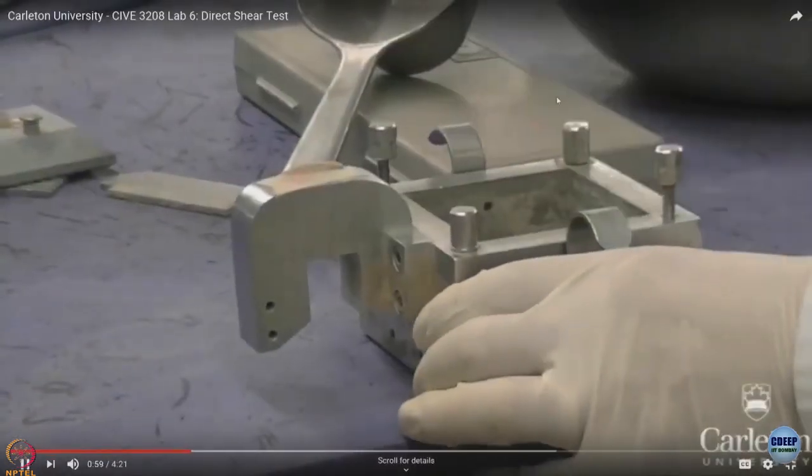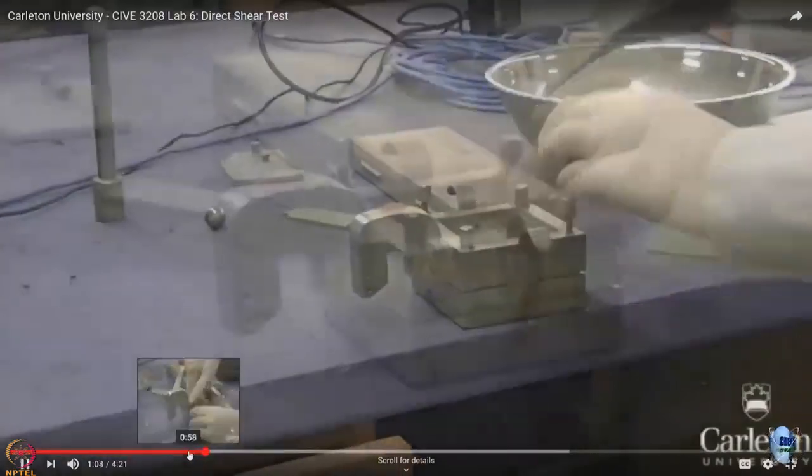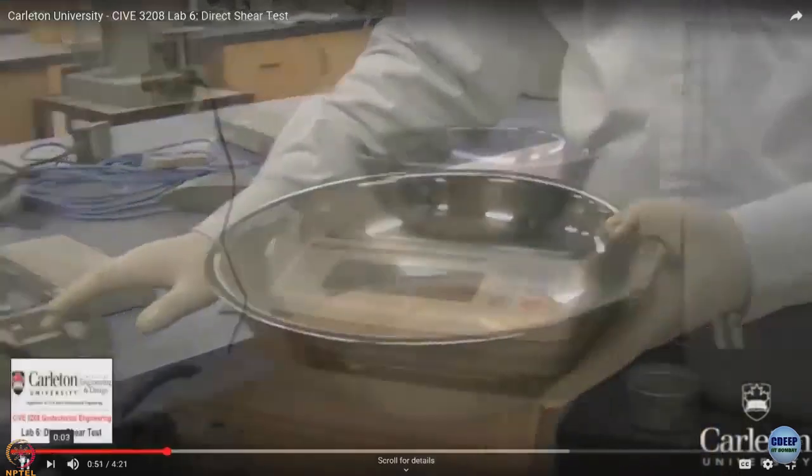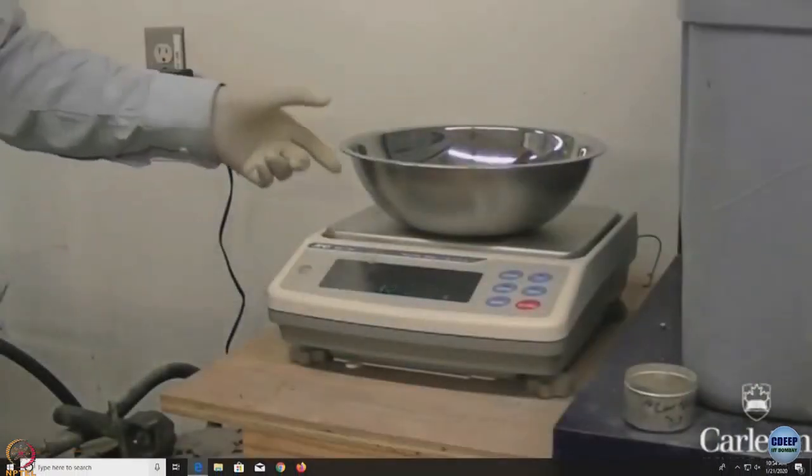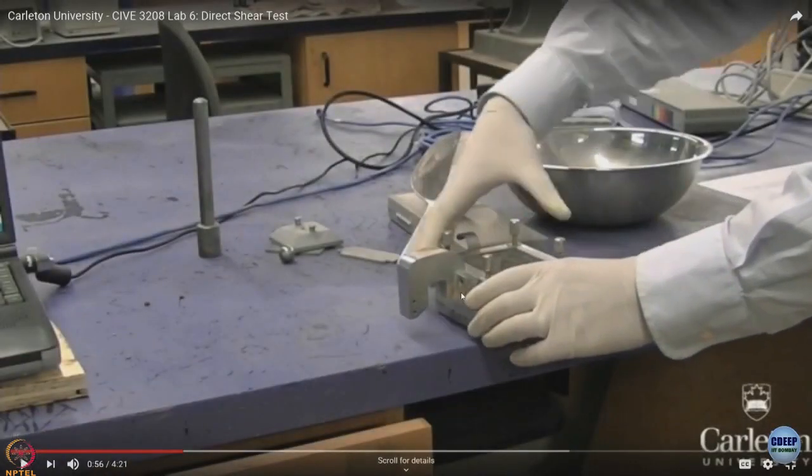So this is the box, you must have seen that there are two halves of this box, see it again. You can weigh the soil and look at this, the way this guy has mounted the upper half on the lower half of the box.